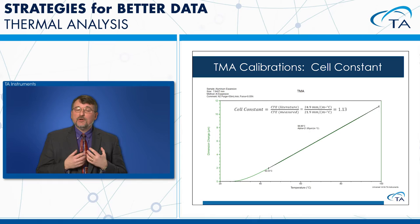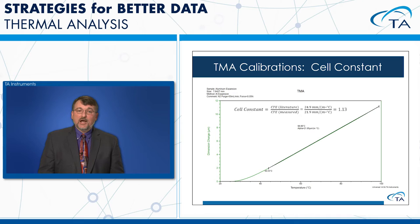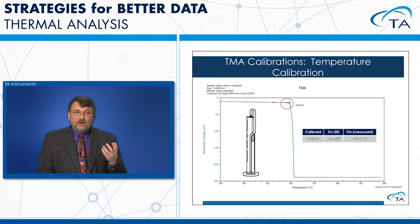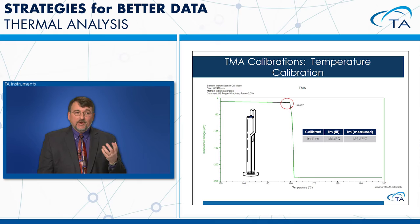This cell constant gives us the best measurement of coefficient of thermal expansion when running samples. For TMA temperature calibration, a melting standard such as indium is placed on the stage with a probe on top, and we heat up and look for the indentation when the sample softens. The probe penetrates at 159.67°C; that value is entered into the table to correct for the temperature offset.